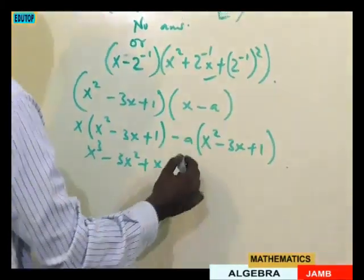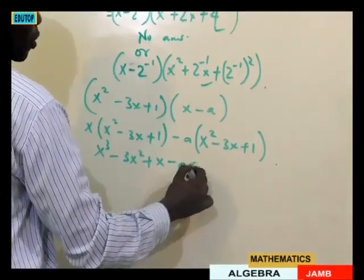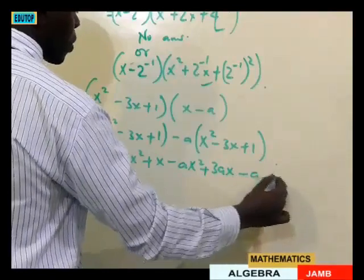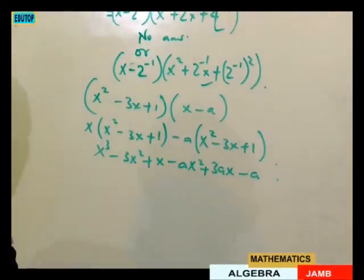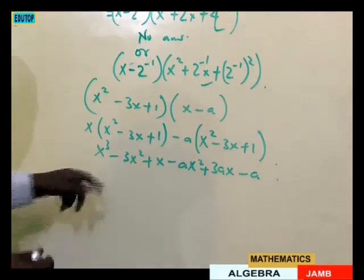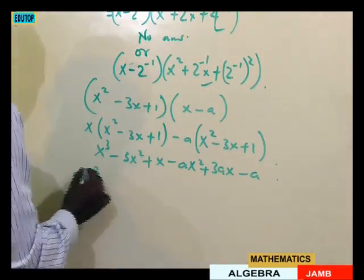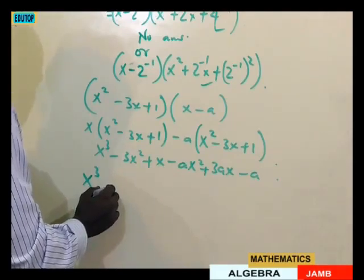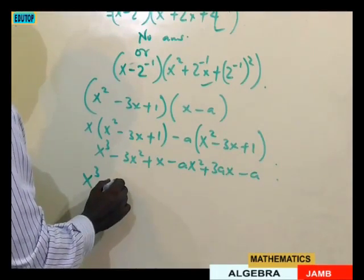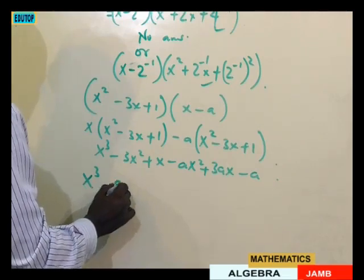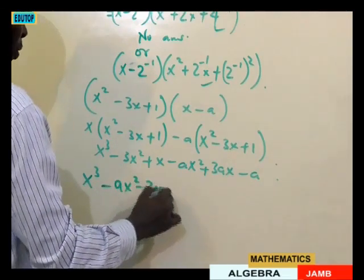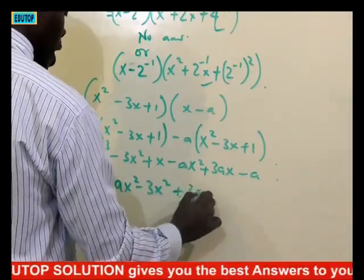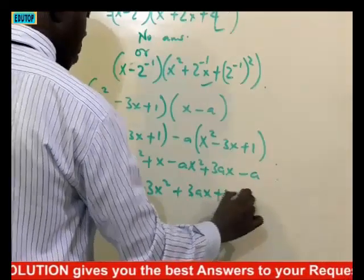Having opened it out, from the second part we get minus ax squared, plus 3ax, minus a. So bringing them all together, we have x cubed, then minus ax squared minus 3x squared, then plus 3ax plus x, minus a.